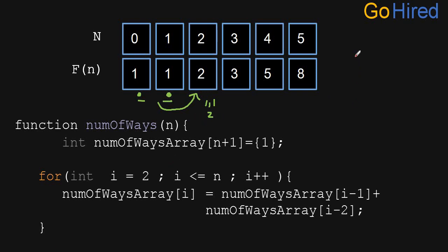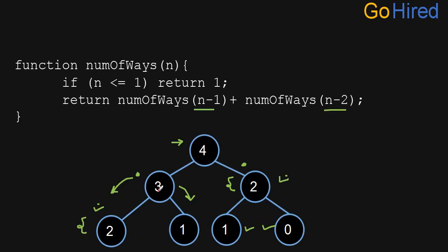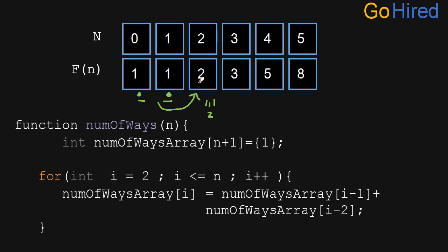For n=3, we need to call for 2 and 1. Since 1 and 2 have already been computed, we reuse them. For i=3, it goes to numberOfWays[3-1] = numberOfWays[2] plus numberOfWays[3-2] = numberOfWays[1], adds them, and stores it into numberOfWays[3], and so on. For jumps of 1, 3, and 5, we iterate over both the total array and the possible jumps.